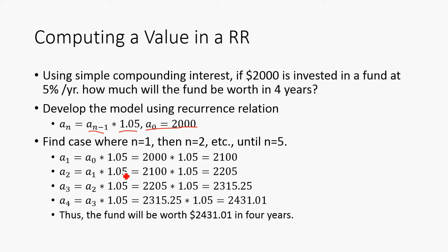So first we're going to find out the case where n equals 1. So a_1 is going to be a_0 * 1.05. That's just 2000 * 1.05, which is 2100. So now that we have that, we can find a_2, which is just a_1 * 1.05, which is going to be 2100. We're just borrowing that from there. So it will be 2100 * 1.05, which is 2205.